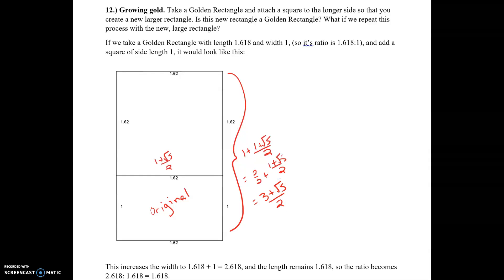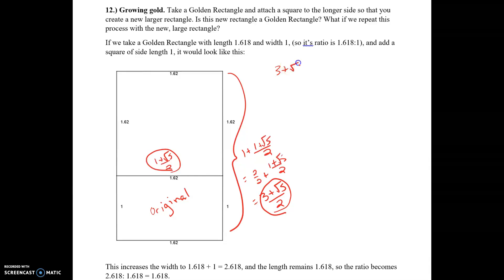So on our new rectangle, the new length is (3 + √5) / 2, and our width is (1 + √5) / 2. So we have a new ratio of (3 + √5) / 2 to (1 + √5) / 2.